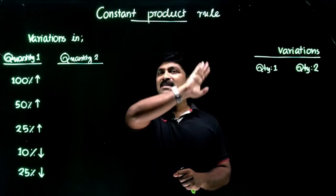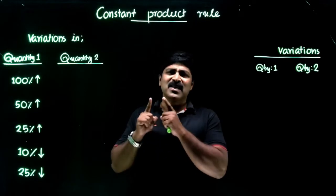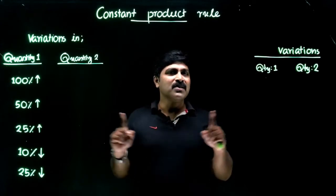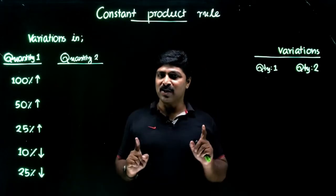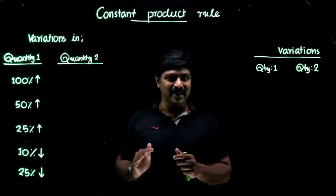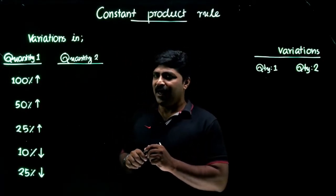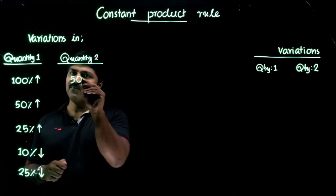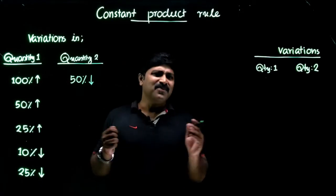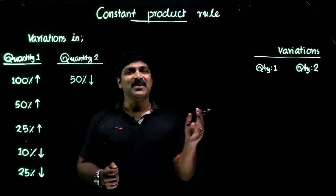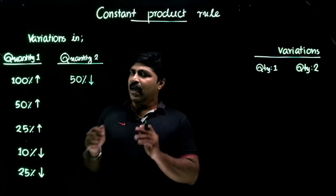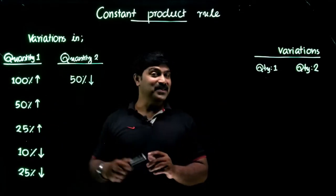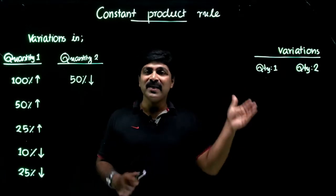That's the application of this Constant Product Rule. Once you are familiar with this trick, you can instantly solve these kinds of questions — it's a time-saving approach. To summarize: a 100 percent increase in the first quantity results in a corresponding decrease of 50 percent in the second quantity. Now, can you guess the result for the second example — if the quantity is increased by 50 percent, what should be the corresponding decrease in the second quantity?